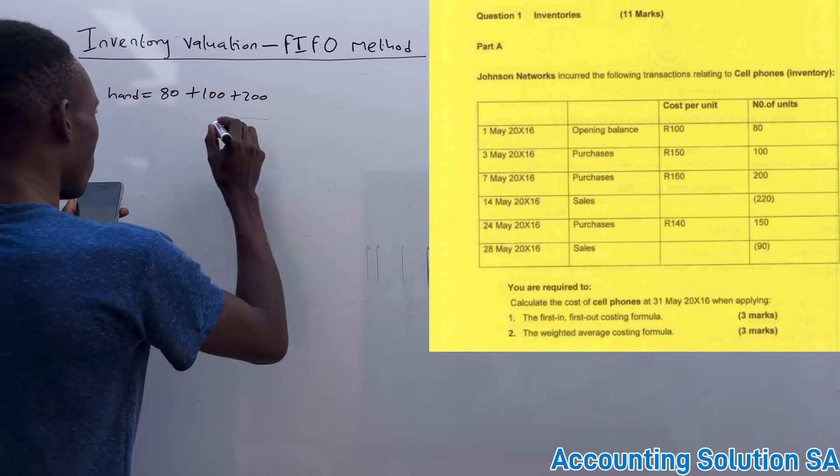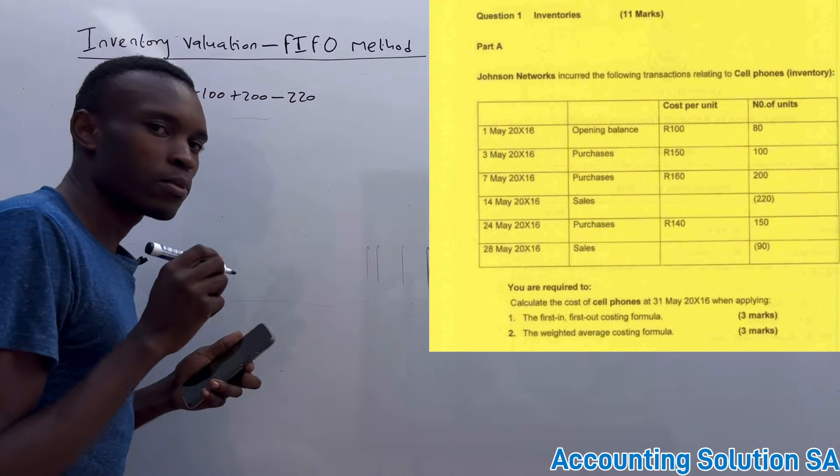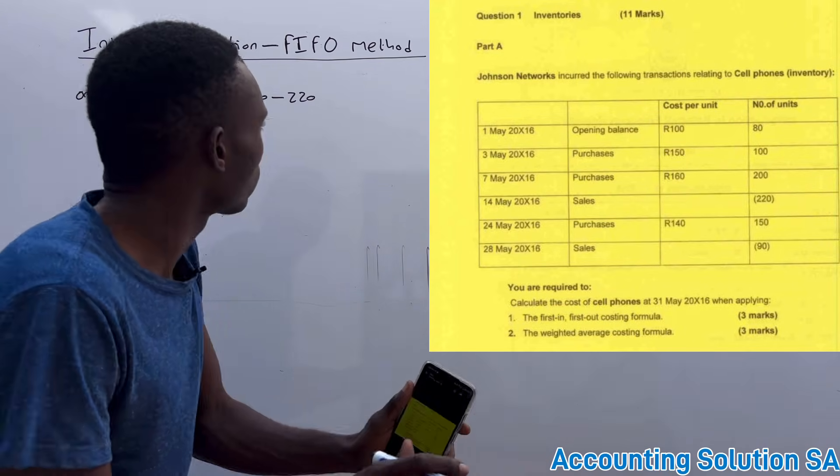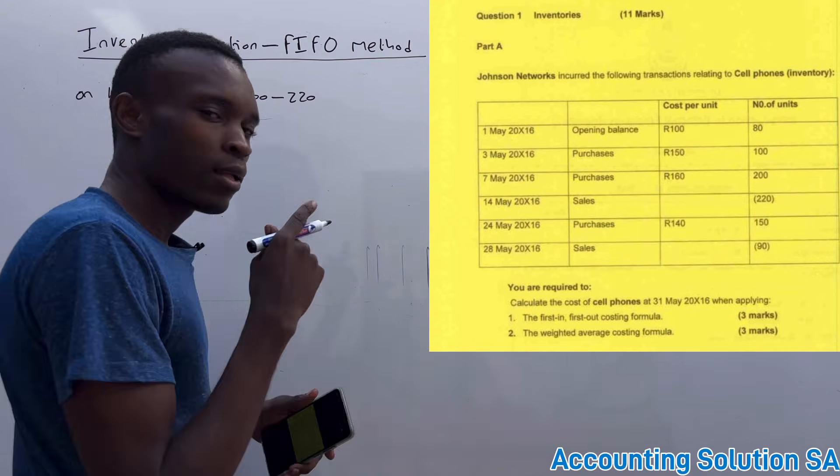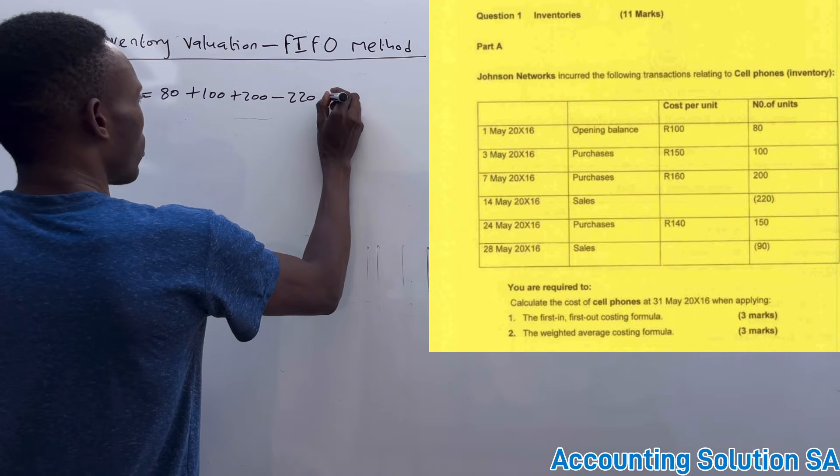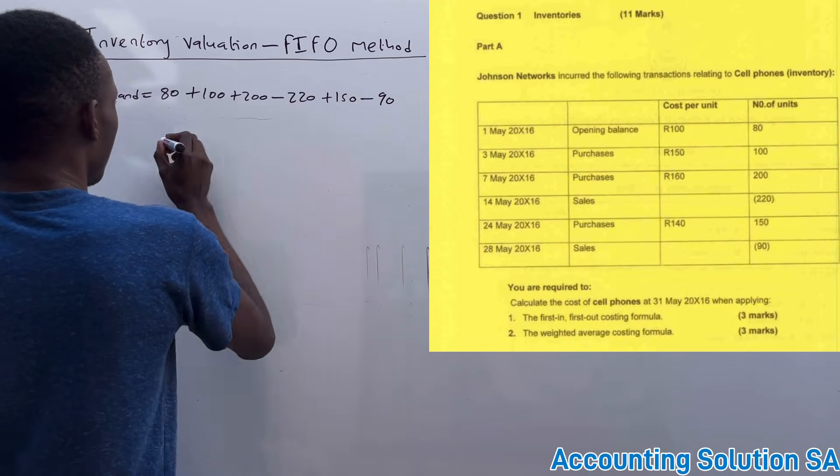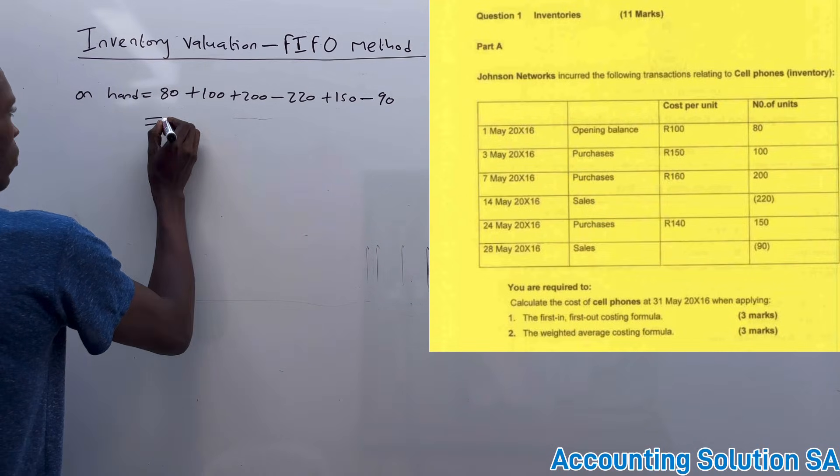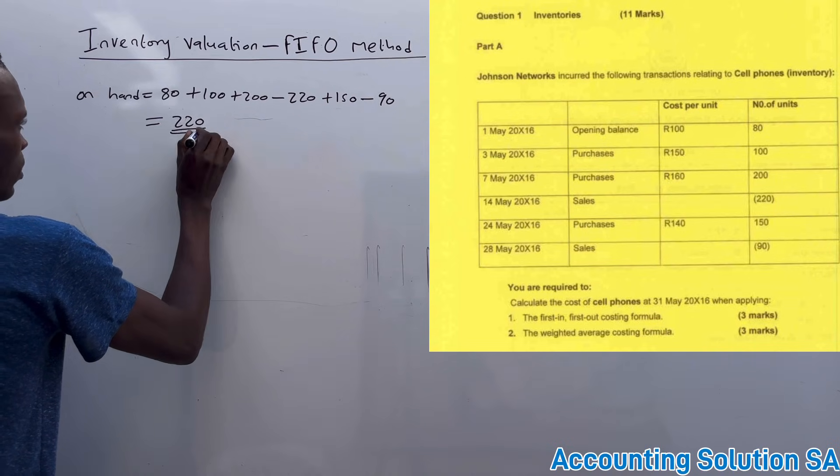We sold 220. The ones that we sold we subtract because it goes out. The ones that we purchase go in, we add. The ones that we return go out, we subtract. Then we add 150 of purchase and we subtract another 90 that has been sold. Then we're going to be left with on hand of 220 units.